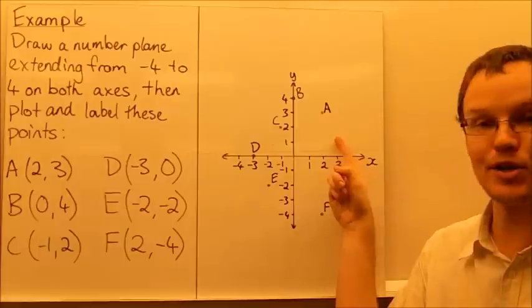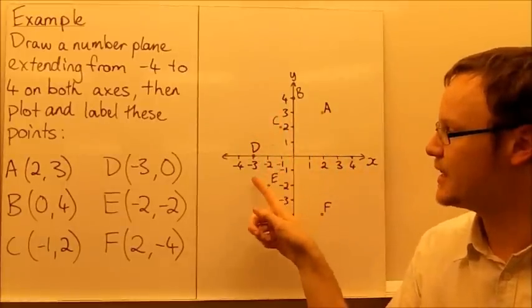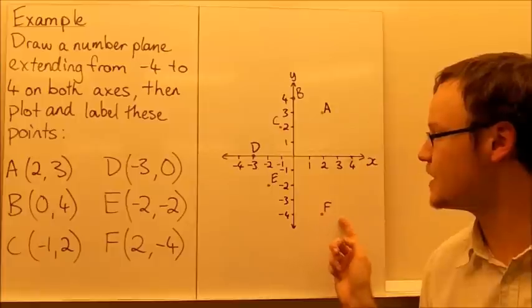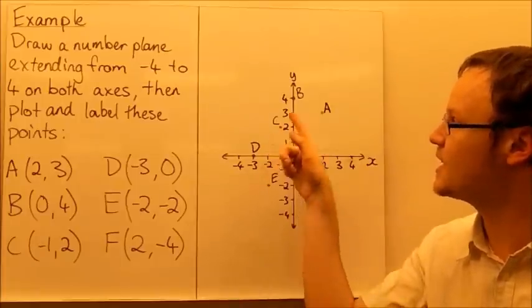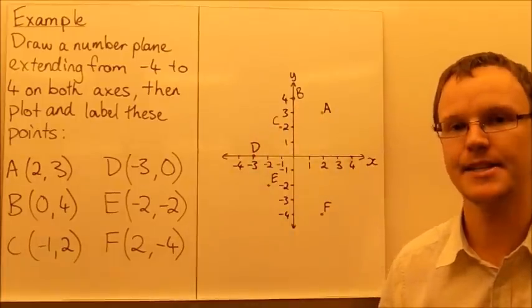So here, our point A is in the first quadrant, C is in the second quadrant, E is in the third quadrant, and F is in the fourth quadrant. D and B are both on the borders of two quadrants, so it's in neither.